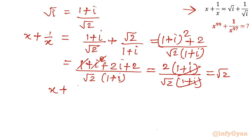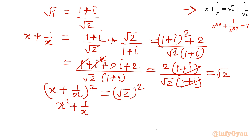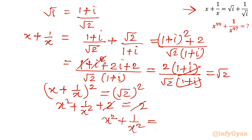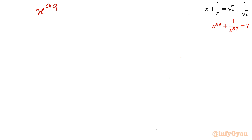Taking the square of both sides: x plus 1 over x whole square equals root 2 whole square. So a squared plus b squared plus 2ab equals 2. This 2 cancels with 2ab, giving the same equation x squared plus 1 over x squared equals 0, this time using the property of complex number i. Now let us simplify our expression x power 99 plus 1 over x power 97.